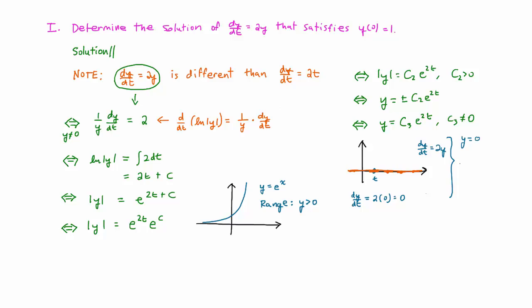We can check to see if y equals zero is a solution to the differential equation by substituting it into the equation. The left-hand side, which I've abbreviated as LHS, is dy/dt, and this is zero for the constant function y equals zero. The right-hand side is 2 times y,